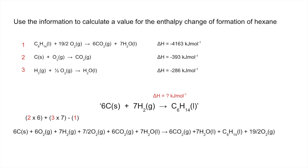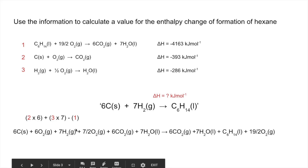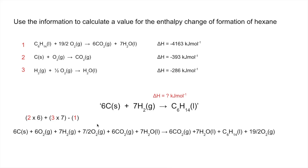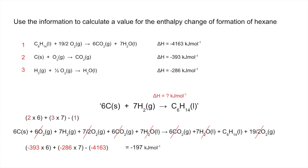So we take equation two times six, add equation three times seven, and subtract equation one. Writing out all the species gives a large combined expression. We then cancel like terms: oxygen-wise, 6/2 plus 7/2 gives 19/2 O₂ on each side — they cancel. Carbon dioxide: six on the left, six on the right — they cancel. Water: seven and seven — they cancel. We're left with six carbon solid plus seven hydrogen gas giving one mole of C₆H₁₄ liquid — exactly the equation we want. Applying the same operations to the enthalpy values gives the answer: -197 kJ/mol.